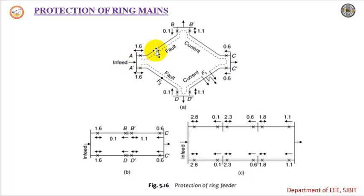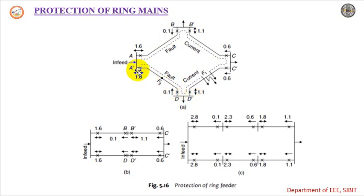For feeder AB, there is one non-directional and one directional relay. Feeder BC has one non-directional and one directional relay. Feeder CD has one directional and one non-directional relay. Similarly, feeder AD has one non-directional relay. Let us say there is a fault on the feeder between D' and C'. The fault point is indicated here, and when the fault occurs, all currents in the ring main system will try to flow towards the faulty part.